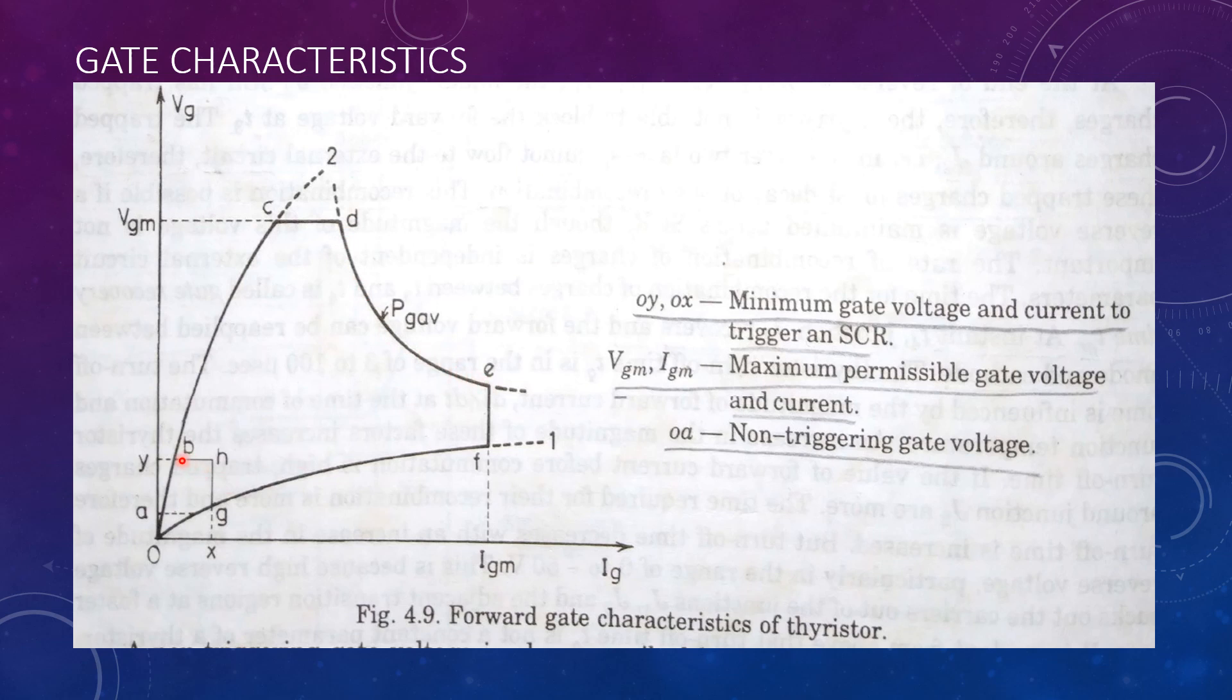The operating point of a thyristor must be confined in the region B, C, D, E, F, G, H, B.